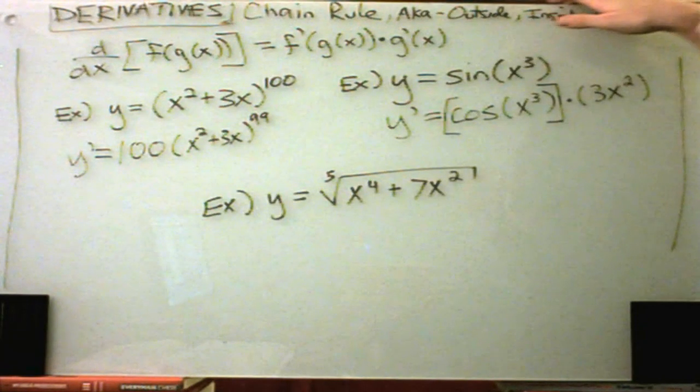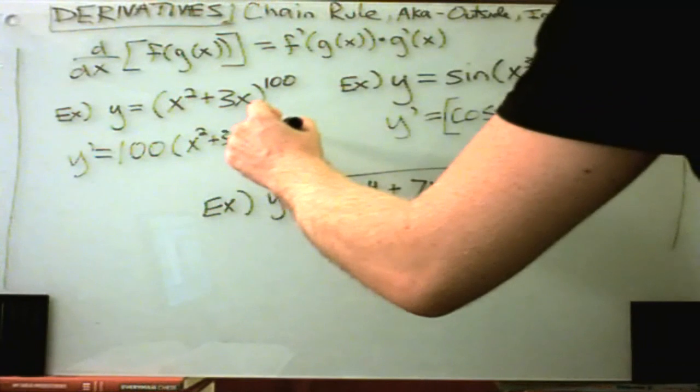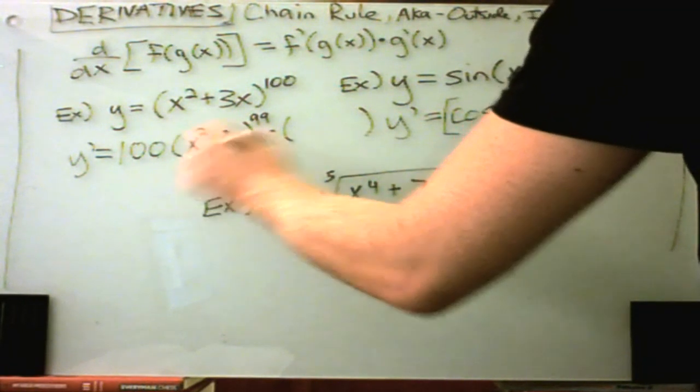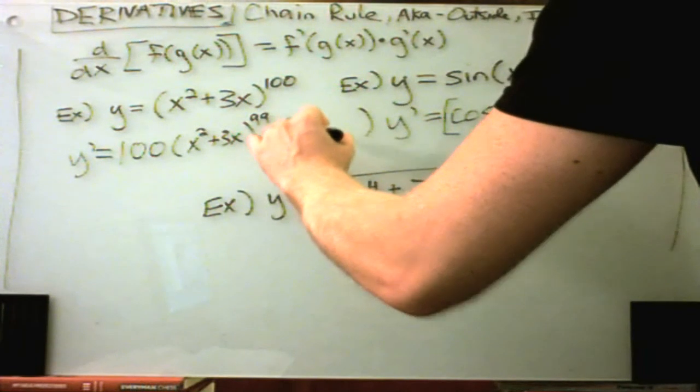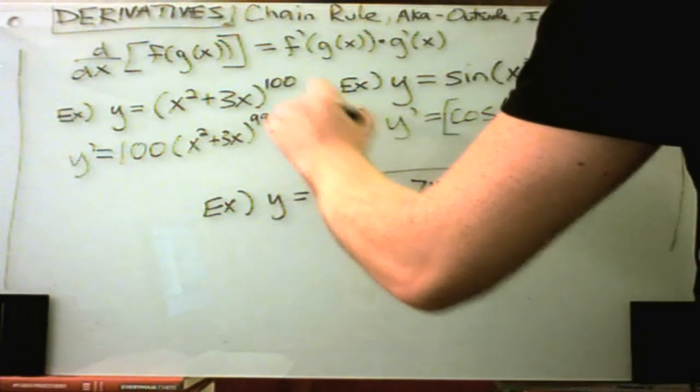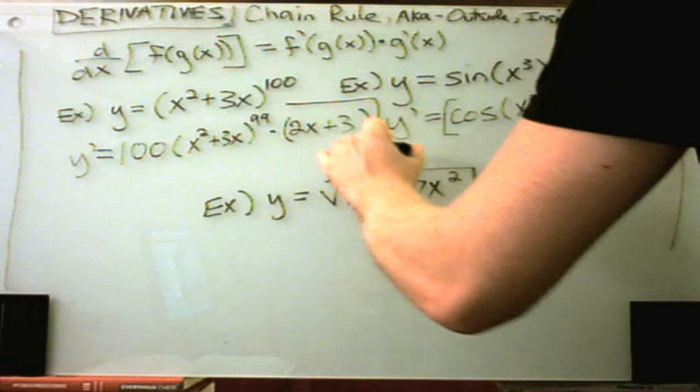And we're still not quite done yet. Again, this is where we have to multiply by the derivative of the inside term. So the derivative of x squared is 2x. And the derivative of positive 3x is just plus 3. And again, that's your solution.